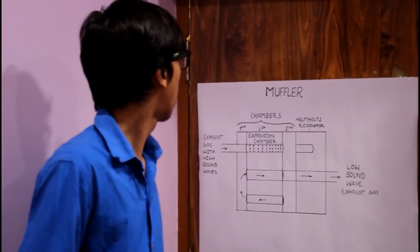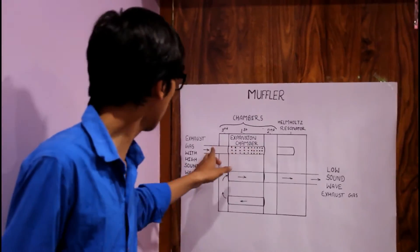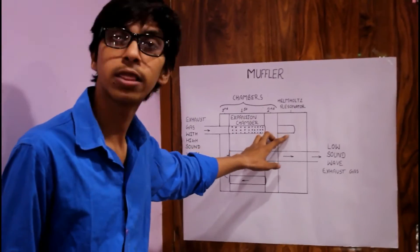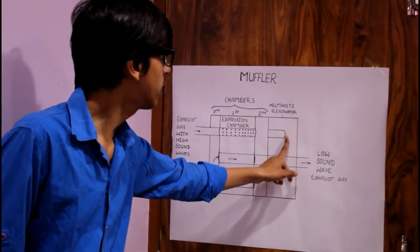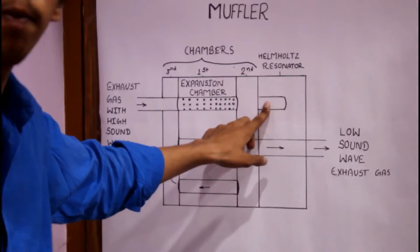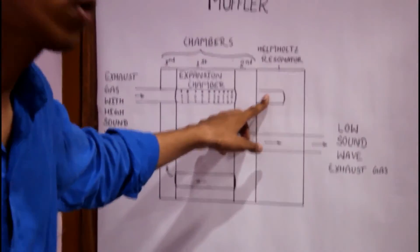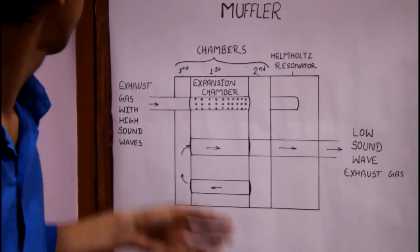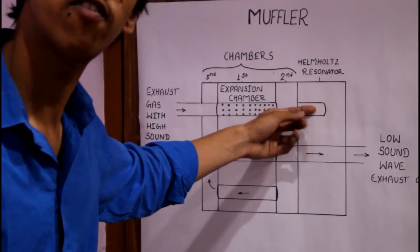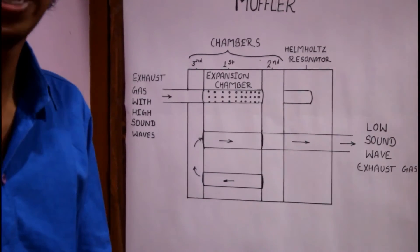The very high sound waves go directly to the Helmholtz resonator from the expansion chamber. In the Helmholtz resonator, the sound waves collide with the wall and reverse through this pipe with the same frequency. The next sound waves coming from this pipe collide with those same-frequency sound waves and produce low sound waves in the exhaust gas.